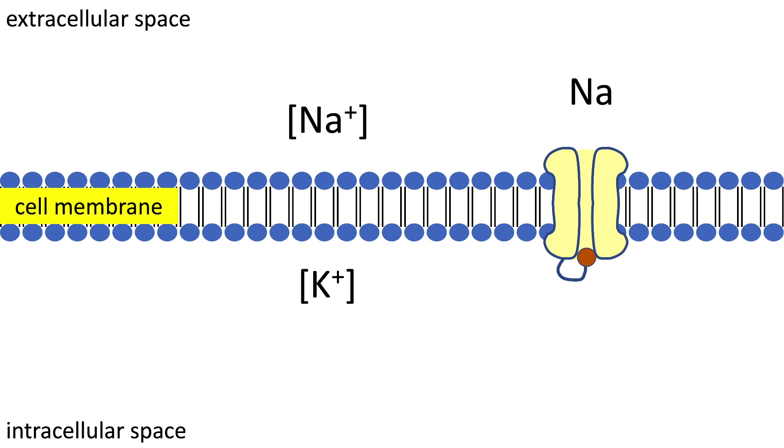We have charges on both sides of the cell membrane and they are divided by a non-conductive layer. So it makes sense to look at the analogy of a circuit. In a circuit this setup can be very well represented using a capacitor with the capacitance CM, which stands for the capacitance of the cell membrane.